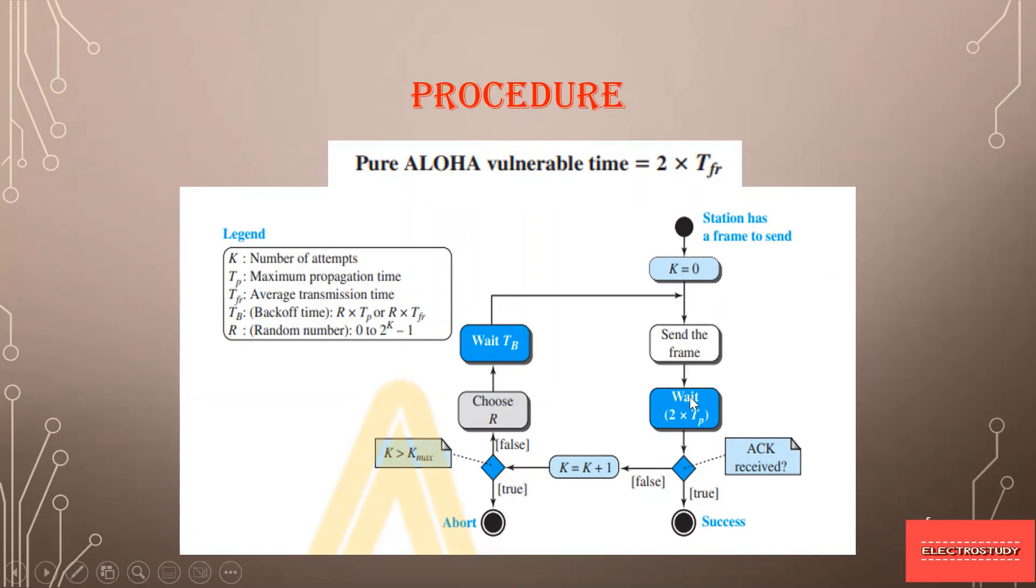Once after wait, it receives the frame, then the condition is becoming true and it is telling that acknowledgement is received and it is successfully transmitted to the receiver side. But if suppose after wait time also if there is no frames received, then it is going for another check. It is understood that that frame is lost because of collision and it is going for another number of attempts. K is equal to K plus 1. That is here it is 0, so 0 plus 1 is 1, so it is taking the next frame.